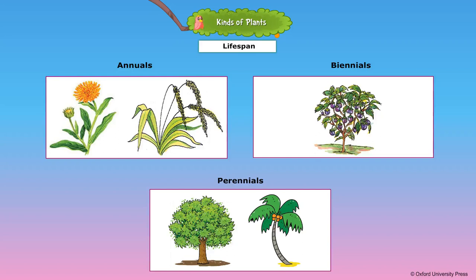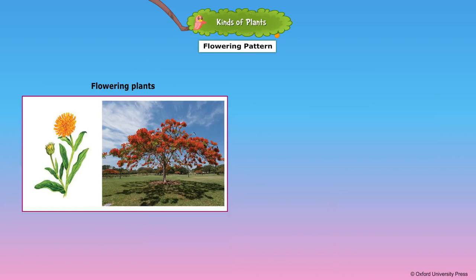Perennials: a perennial plant is one that lives for more than two years. Examples include banyan tree, mango tree, coconut tree, and neem tree. Flowering plants: plants that produce flowers are called flowering plants. Examples are rose, hibiscus, mango, and gulmohar.